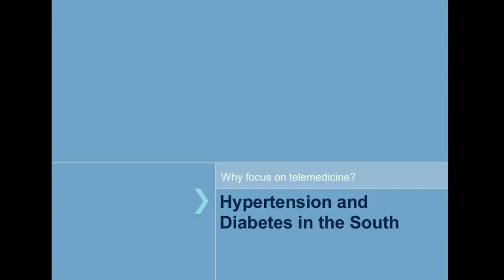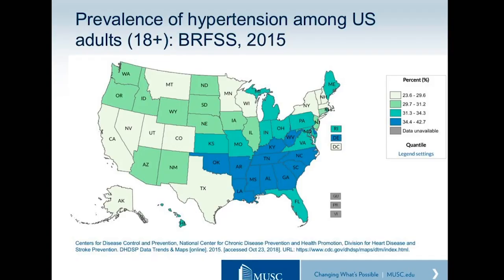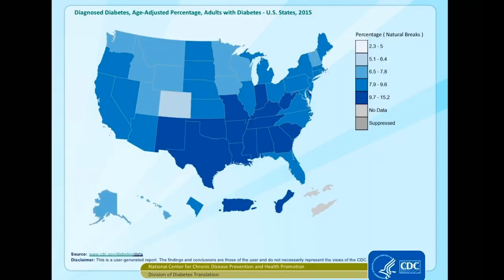My interest in telemedicine initially came through looking at disparities in care — particularly our outpatient internal medicine population regarding hypertension — then expanded into diabetes and other chronic disease management. As you know, being in the Southern Medical Association, the prevalence of hypertension is rampant in our area, as you can see from this chart. Similarly, diabetes prevalence is also rampant in the constituents we're treating.